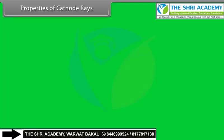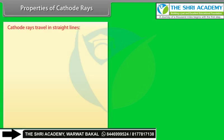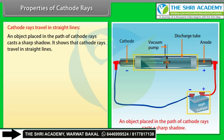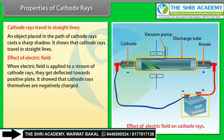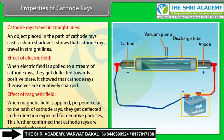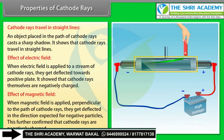Properties of cathode rays: Cathode rays travel in straight lines — an object placed in their path casts a sharp shadow. When an electric field is applied, cathode rays are deflected towards the positive plate, showing they are negatively charged. When a magnetic field is applied perpendicular to their path, they deflect in the direction expected for negative particles, further confirming they are negatively charged.